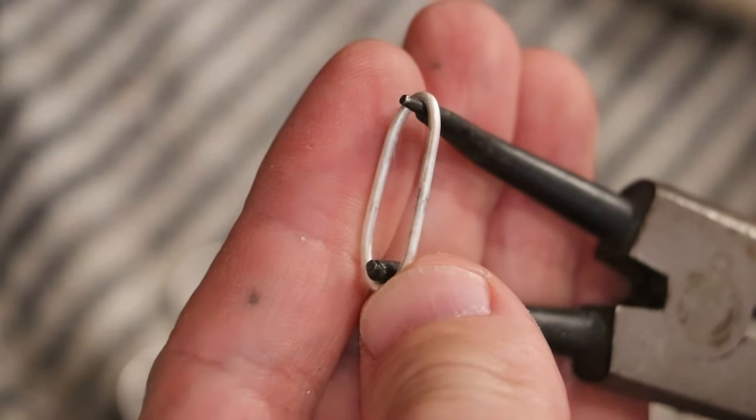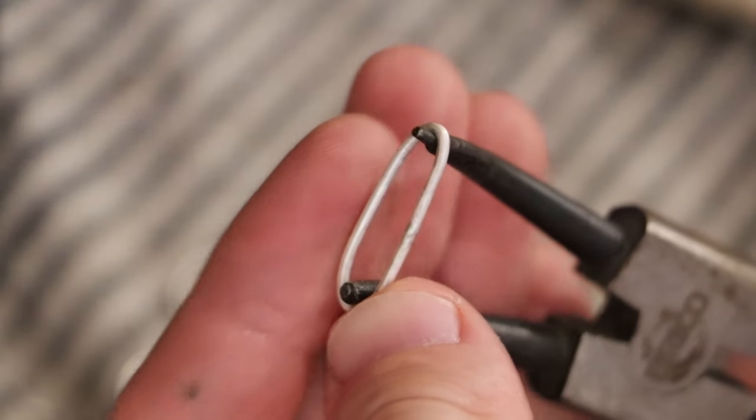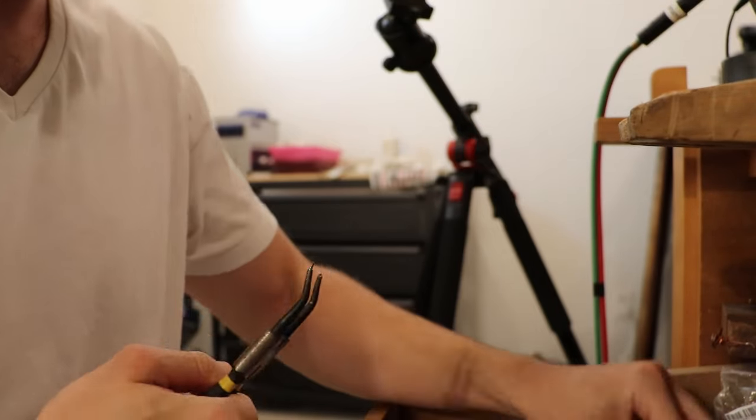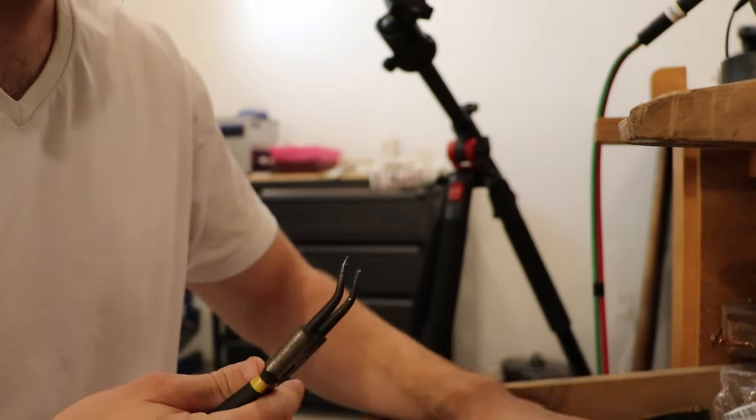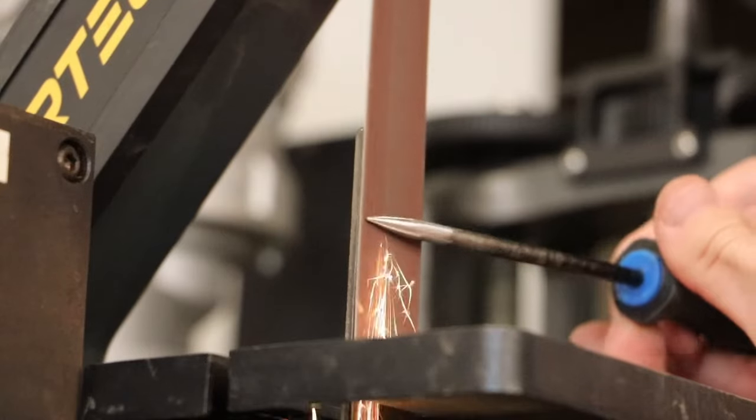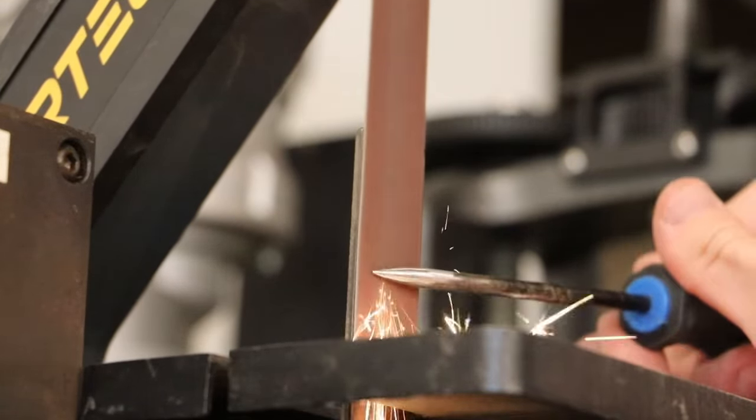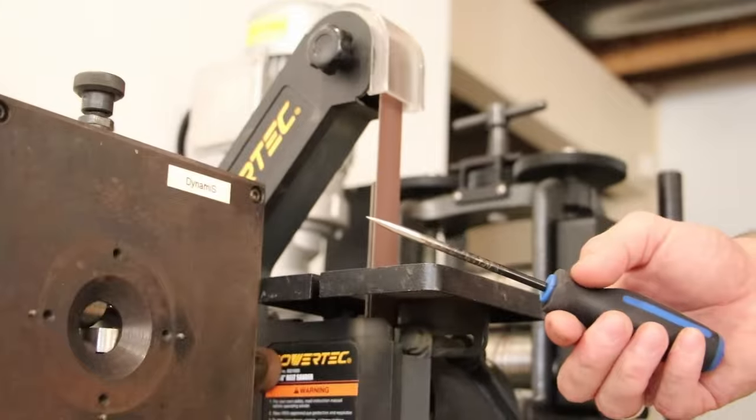Crafting handmade silver bracelets requires more than just skill. It's about having the right tools and materials on hand. Let's dive into what you'll need to start this creative journey. First off, silver is the star of the show. You'll often find it in sheets or wire form, depending on the bracelet design.